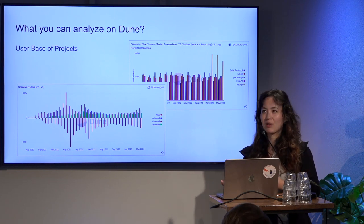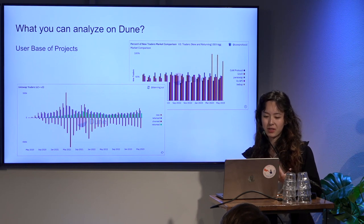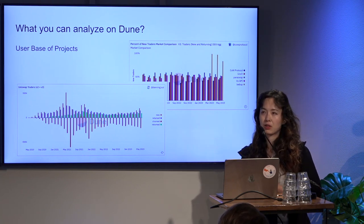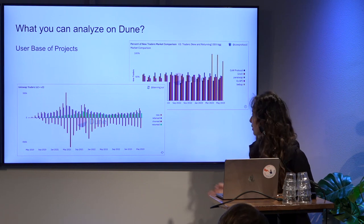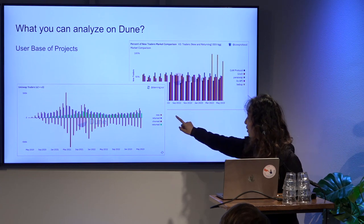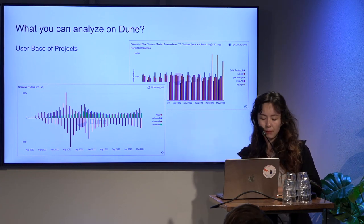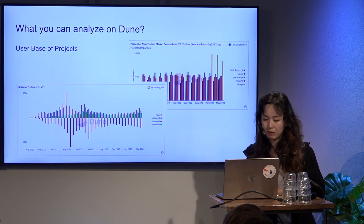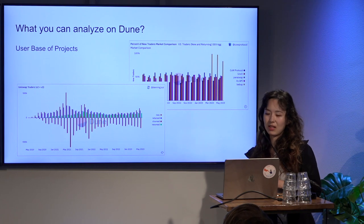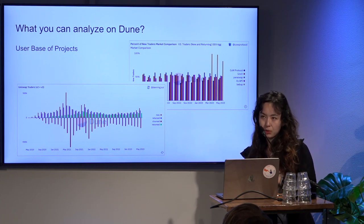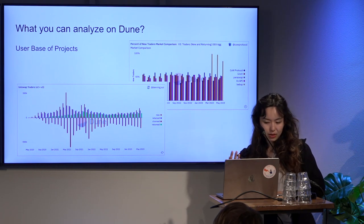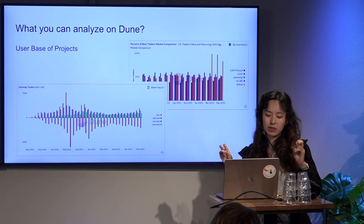Besides market share, project health, and network data, you can also analyze the user base of a project. One chart here is looking at the user segmentation of Uniswap, both on V2 and V3. 'New' means this month how many new wallets made a trade on Uniswap that were never active on Uniswap in the past. 'Retained' means this wallet was trading last month and also trading this month. 'Churned' means this wallet was trading last month but not this month. 'Returned' means this wallet traded before, not last month, but is trading this month.